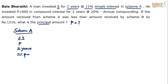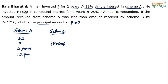What is Scheme B? There is another scheme — Scheme B. He invested P plus 600, so this time the principal has changed. Principal amount is P plus 600. It is a compound interest case for 2 years at 20% per annum.